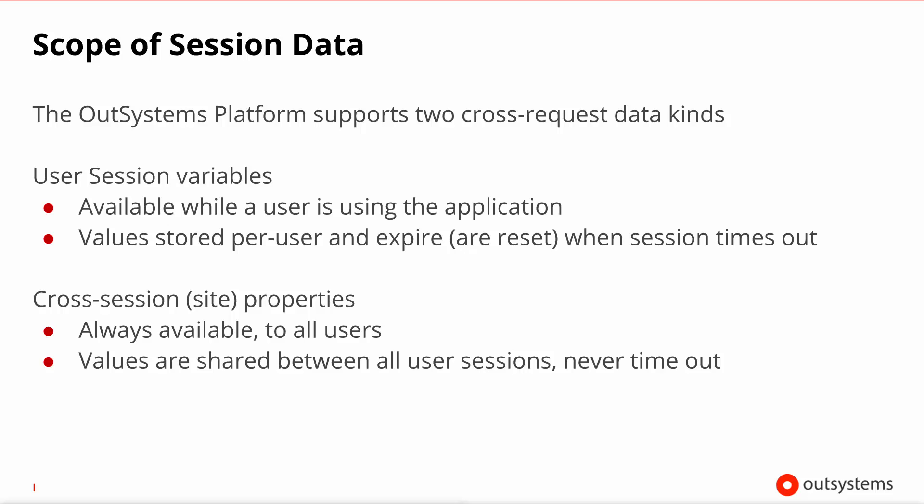You have session variables and you have cross-session site properties. Session variables exist per user, meaning that user A and user B have potentially different values for the same session variable. They are global in the sense that they're available in every scope, but not global in the sense that they have the same value for every user. For that second intention, you have the site properties.